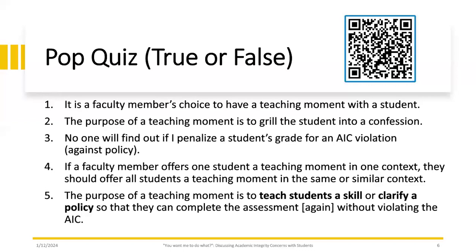It's not trying to guilt them into contrition. So when you have a teaching moment, you should go into it with the idea that you are going to teach them. Number three: no one will find out if I penalize a student's grade for an AIC violation, which is against policy. If you penalize a student's grade, which is against policy, it is possible no one will find out initially—but when they do, the student can file a grievance against the faculty member. Only our office can levy academic sanctions against students.